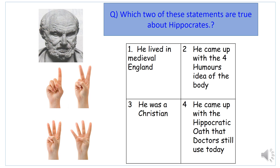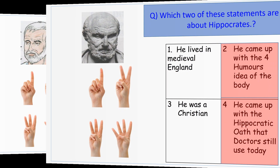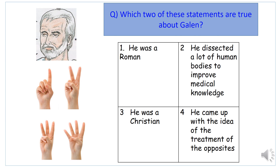The correct answers are: he came up with the four humours idea of the body, and he came up with the Hippocratic Oath that doctors still use today. The four humours — the body is made up of four liquids — is so important for medieval beliefs, as it explains illness through imbalance. The wrong answers: he didn't live in medieval England — he was from Greece and lived thousands of years before medieval times. And he wasn't a Christian — Christianity didn't exist yet; he believed in the Greek gods.